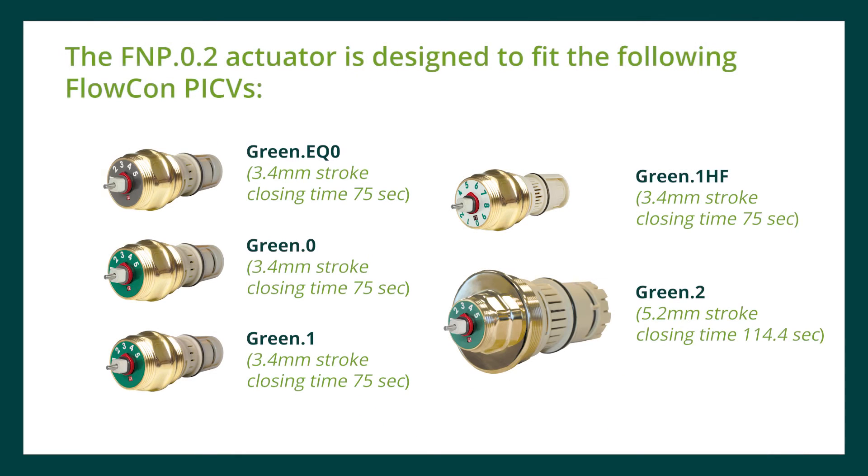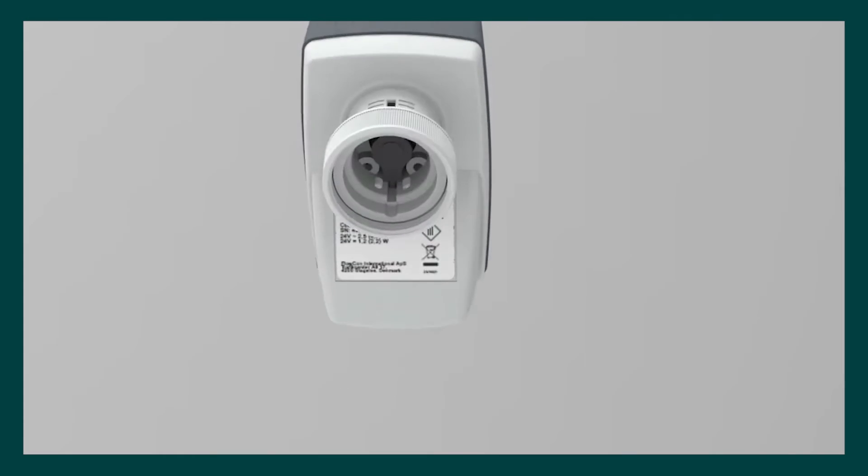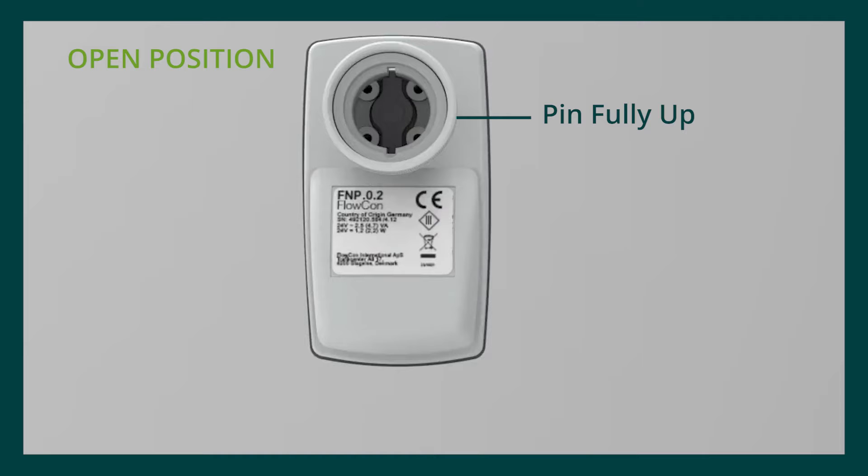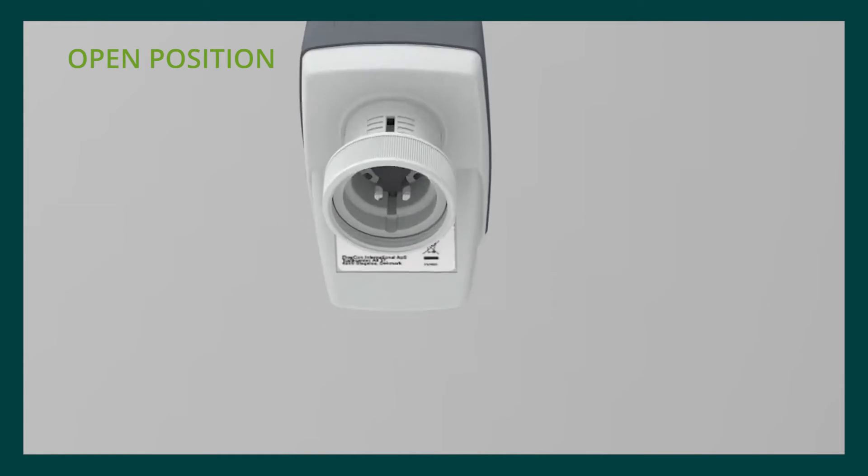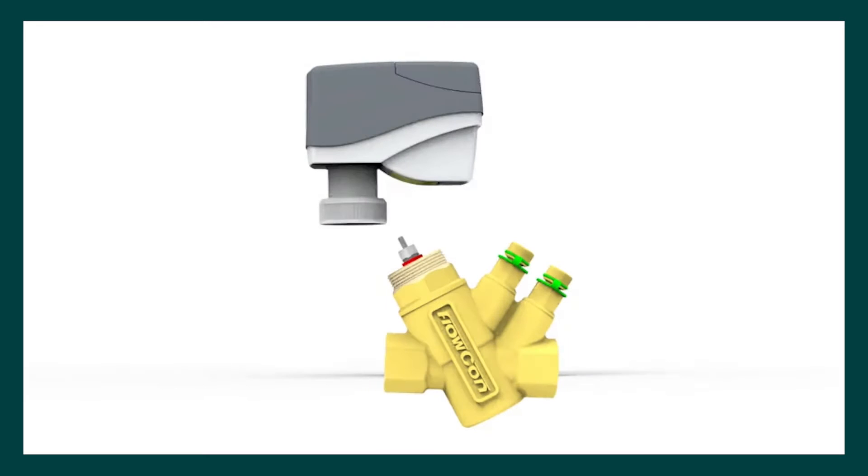The FNP0.2 actuator is designed to fit the following Flowcon PICVs. Ensure the actuator is in the fully open position before mounting it on the valve to avoid the risk of damaging the PICV. Align the actuator to the PICV threaded insert.